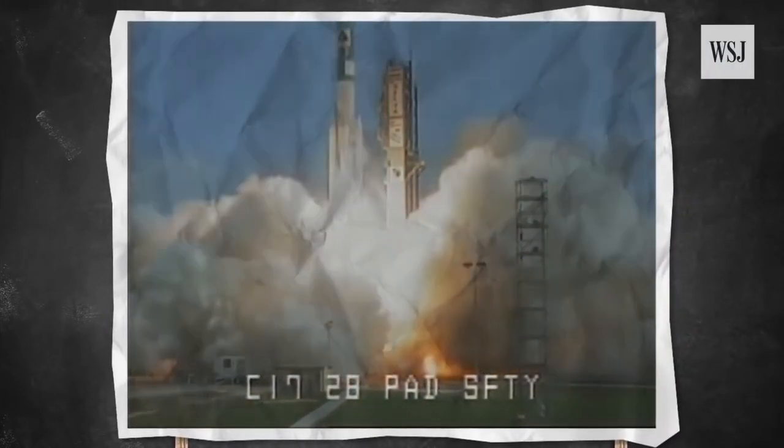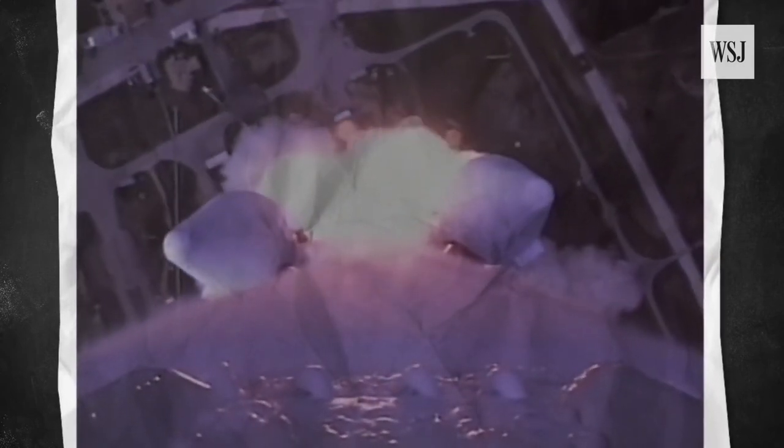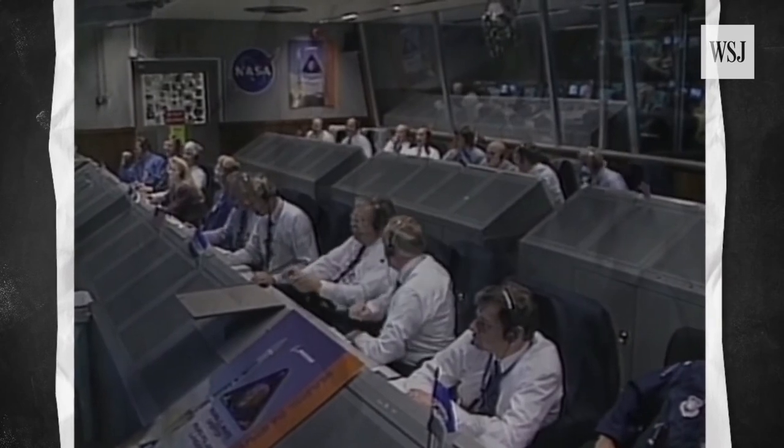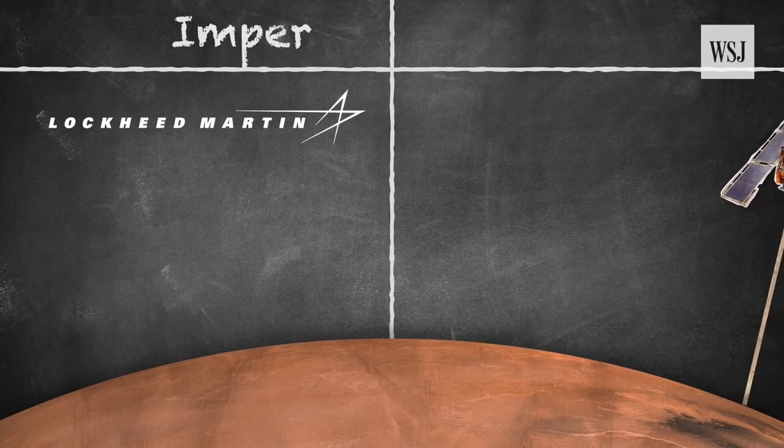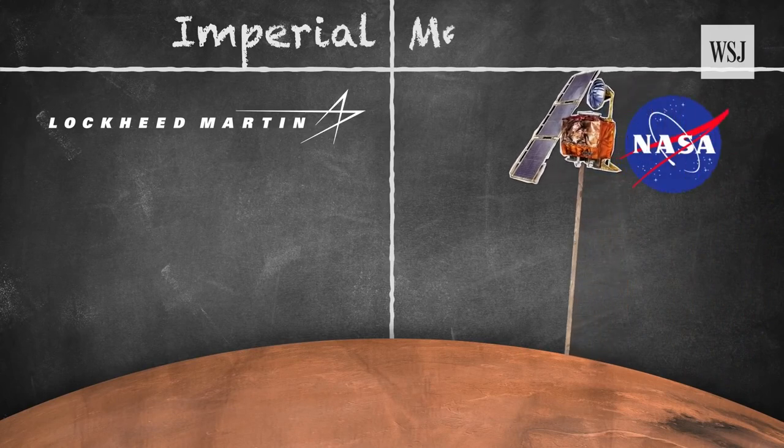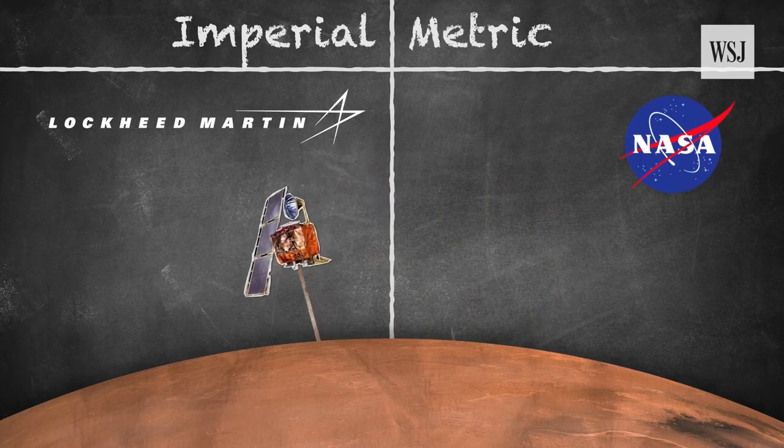In 1999, NASA's $125 million Mars Climate Orbiter disappeared. We have a serious problem with the Mars Climate Orbiter. We may, in fact, be facing a loss of mission. An internal review found Lockheed Martin engineers used imperial units, such as feet, pounds, and inches, in the navigation software. Meanwhile, NASA navigators used metric measurements. That caused the spacecraft to fly too close to Mars, where it is believed to have burned up in its atmosphere.